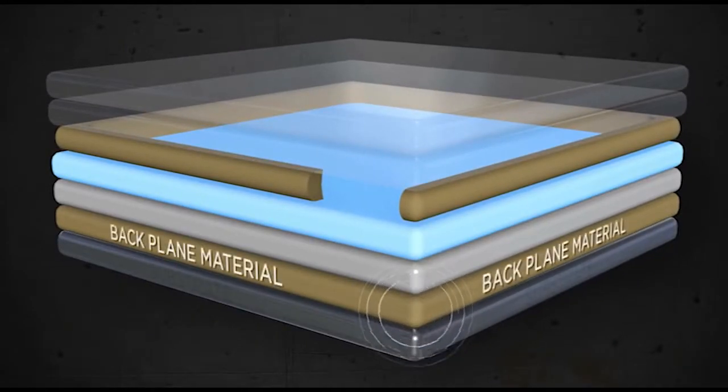First, backplane material. The backplane is a highly conductive, low resistance material that allows the current to be supported across the entire lit surface when applied in an even and consistent manner.